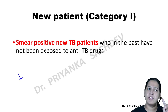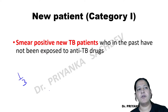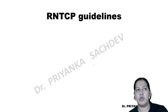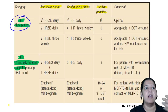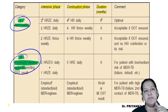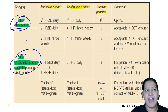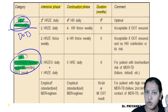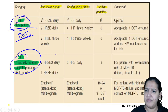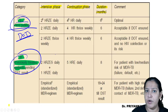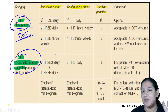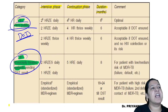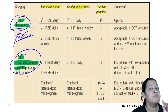Once sputum is positive, decide whether the patient is Category 1 or Category 2. Category 1 is a new patient who has never taken DOTS or any of the five anti-TB drugs before in their life. You must take a careful history to confirm they are truly a new patient.